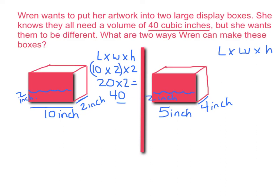Let's see if that works. Our length, we said, was 5 inches. Our width is 4 inches, and our height is 2 inches. 5 times 4 is 20 times 2 equals 40 cubic inches. There it goes. So you can see two different ways in order to find a volume of 40 cubic inches.